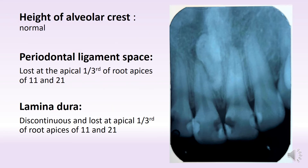So moving on to the height of the alveolar crest — what do we see? We see that it looks normal. This is the CEJ, and the height looks absolutely okay, around 2-3 mm below the CEJ, which is absolutely fine.